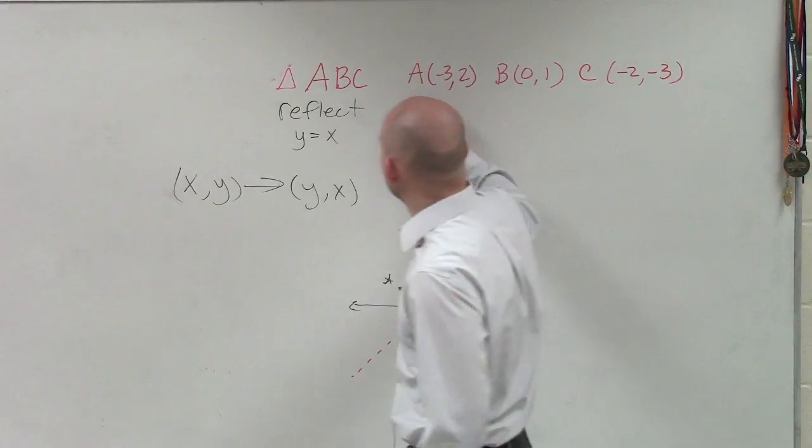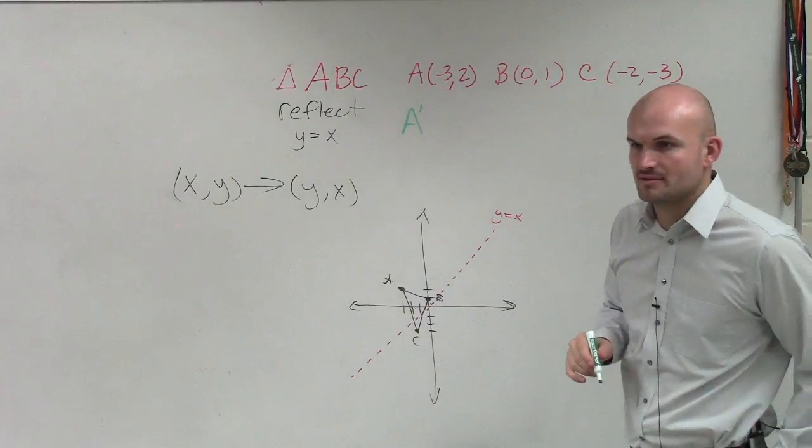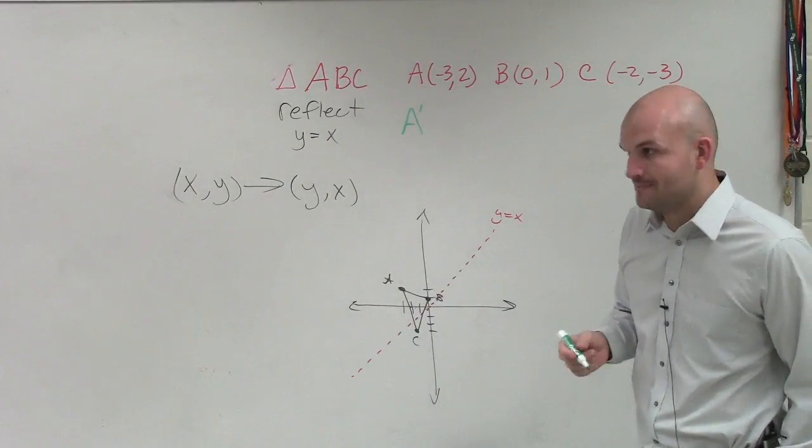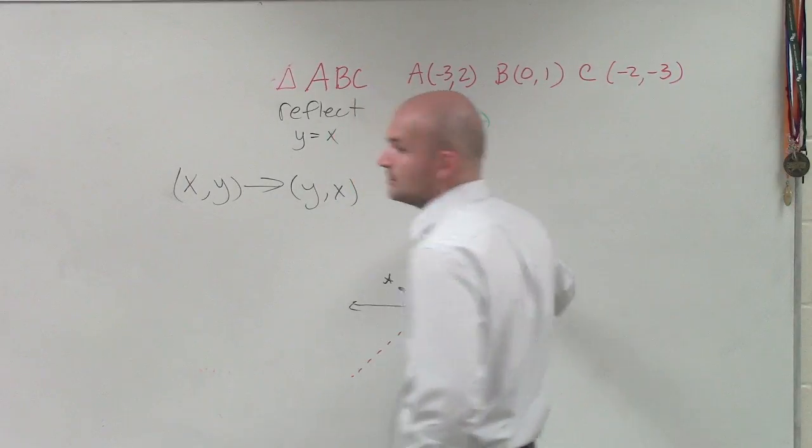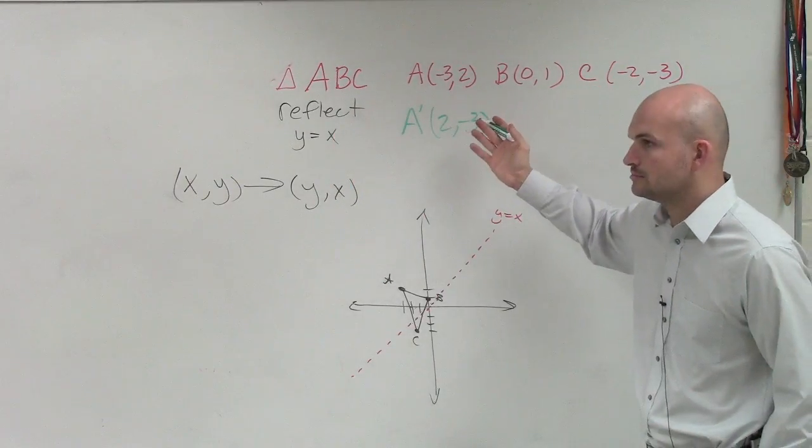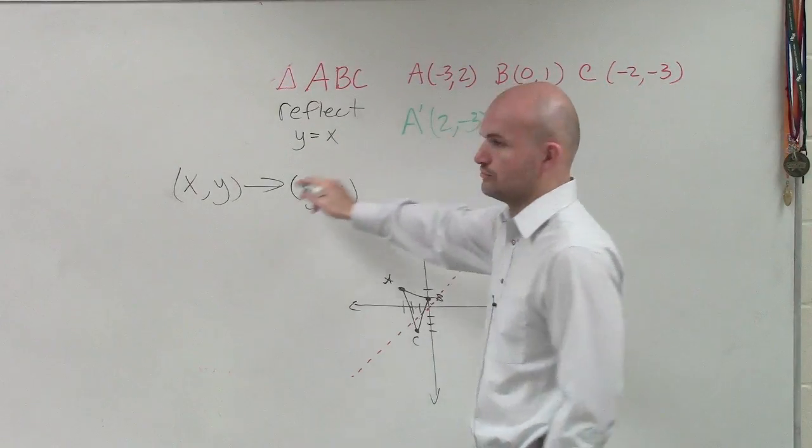Because the reason why is when I apply my transformation, I need to call those new points. So I'm going to call them A prime. And the new coordinates is going to be (2, -3). Caleb, do you see how I just swapped them? Just take the letters and swap them. That's the rule.